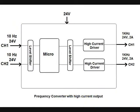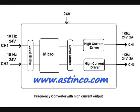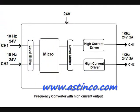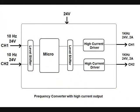The input has very high impedance so it is not creating any load for the primary source of signal. Any 24 volt pulse with 10 hertz coming through any channel causes the corresponding output to have 1 kilohertz 24 volt with 2 amp current capability.